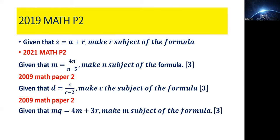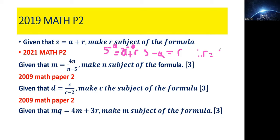Now 2019. Given that S equals A plus R, make R the subject of the formula. This is the simplest of all. Simply subtract A from both sides: S minus A equals R. Therefore R equals S minus A. We have made R the subject of the formula.